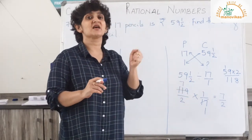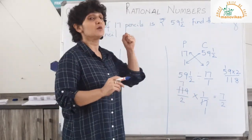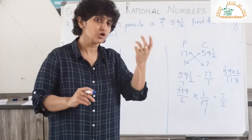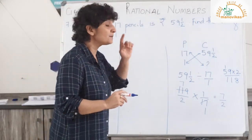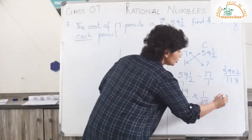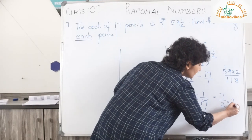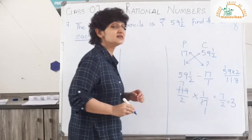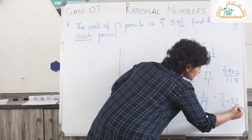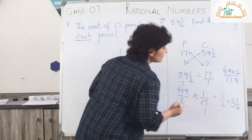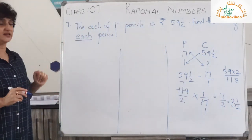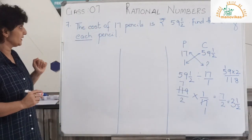My cost is 7 upon 2. We never express the cost as 7 upon 2 directly, so let's convert it into a mixed fraction. 2 goes into 7 three times with remainder 1, so it is rupees 3 and a half. So the cost of one pencil is rupees 3 and a half.